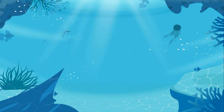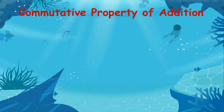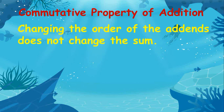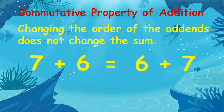The first one is the commutative property of addition. In this property, changing the order of the addends does not change the sum. An example is 7 plus 6 is equal to 6 plus 7, with the sum of 13 in both equations.